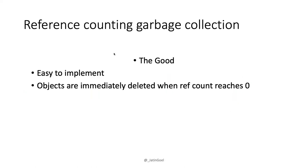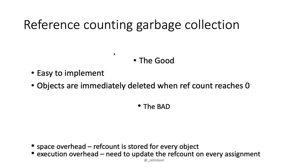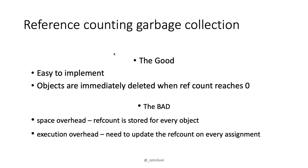Reference counting is easy to implement — you just store an additional value per object and increment or decrement it on every operation. When it reaches zero, you remove the object. The downsides are space overhead, since every object needs an extra stored value, and execution overhead because every assignment or operation must update the reference count.